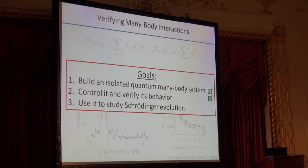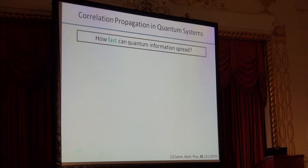I've given you a bit of the flavor of how we might go about building an isolated quantum system and what we can do to control and verify its behavior. Now I want to use it to study Schrodinger evolution in our system. One of the first questions we asked is, how fast can quantum information spread when you have a closed quantum system?